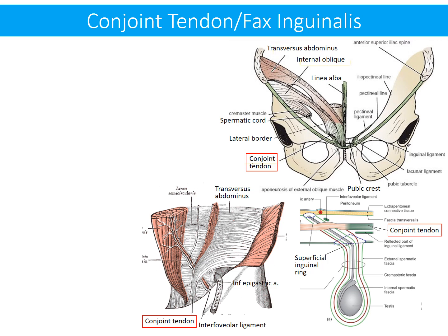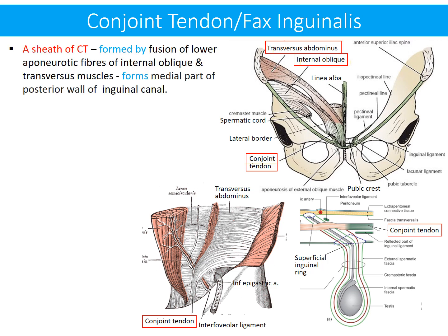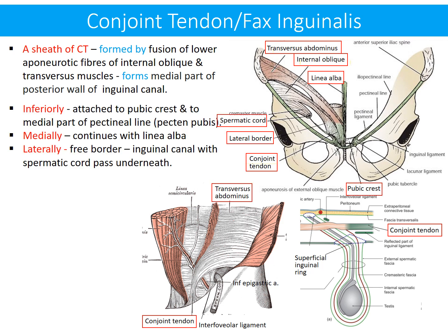Conjoint Tendon, or Falx Inguinalis, is a connective tissue sheath which is formed by fusion of lower aponeurotic fibers of internal oblique and transversus abdominis muscles. The Conjoint Tendon forms the medial part of the posterior wall of the inguinal canal.